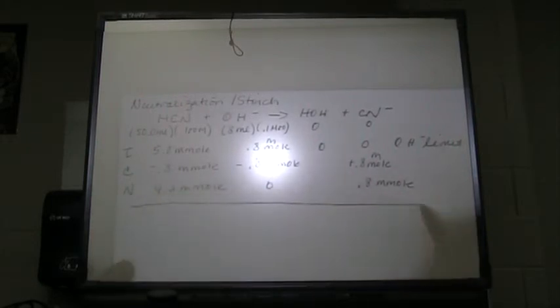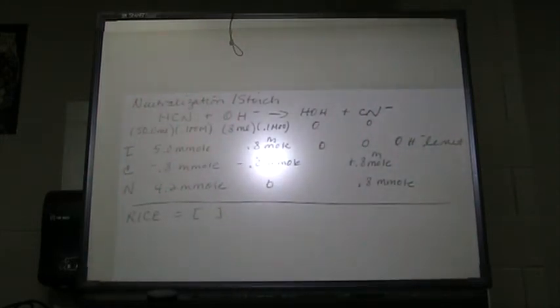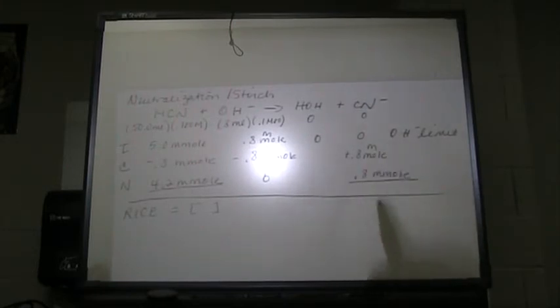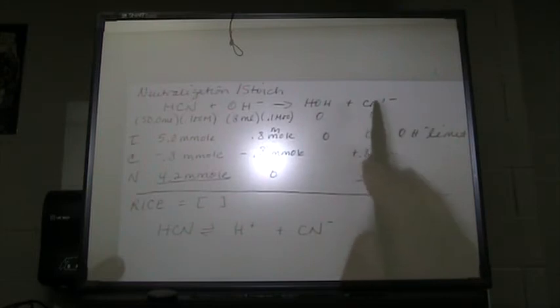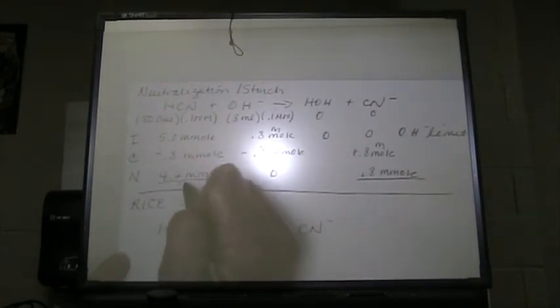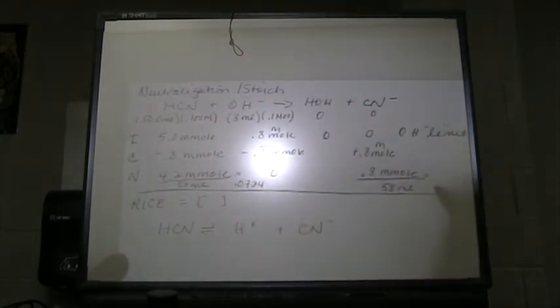From the neutralization step we go to an ICE table. ICE tables require molarity, so let's figure out the molarity of the pertinent species. The equation for the ICE table that determines the pH is the dissociation of HCN. Our total volume is 58 milliliters. HCN is 0.0724 molar and CN⁻ is 0.0138 molar.